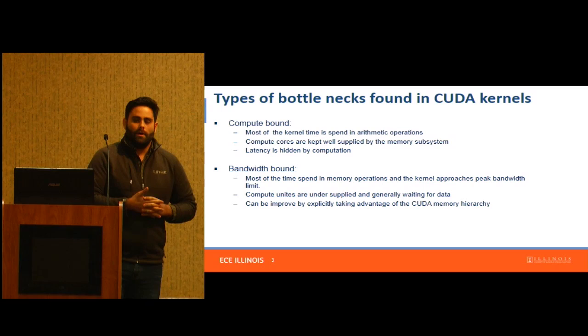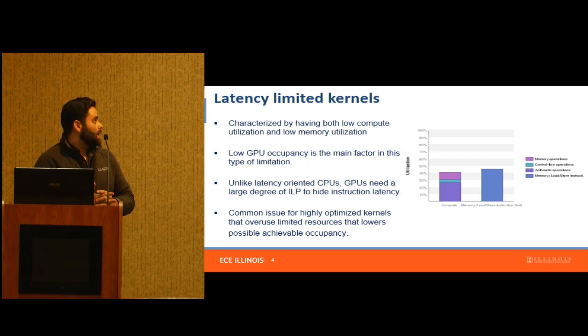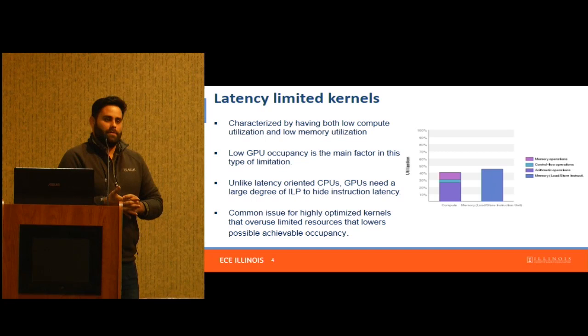Usually your first version of the kernel might be bottlenecked by global memory usage, and the best way to get around this is by starting to use the memory hierarchy in CUDA GPUs — optimizing the way people teach in CUDA GPU classes: use shared memory, thread coarsening, etc.